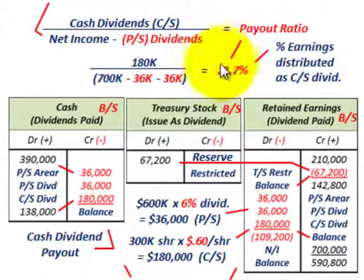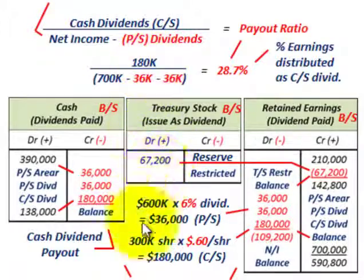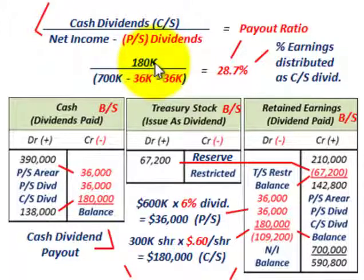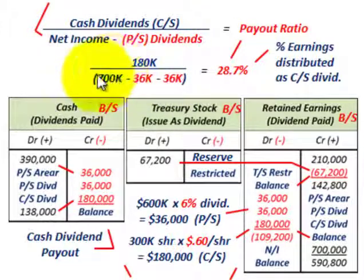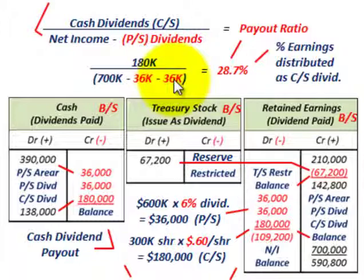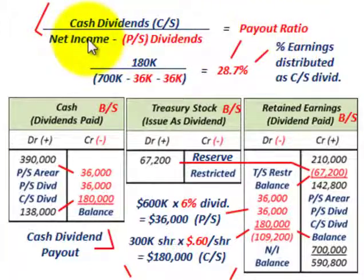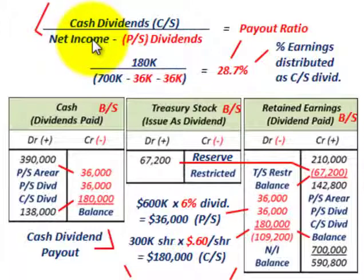The payout ratio is based on the cash dividends for common stock — in this case $180,000, calculated as 300,000 shares times $0.60 per share. The denominator is what's available: total net income of $700,000 reduced by the preferred stock dividends — $36,000 in arrears plus $36,000 for the current year. The key is determining net income available to common stock shareholders: net income less any preferred stock dividends.